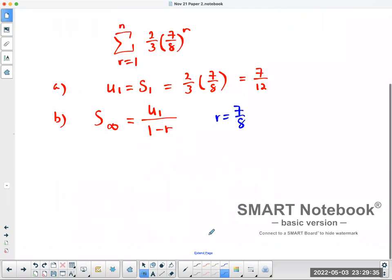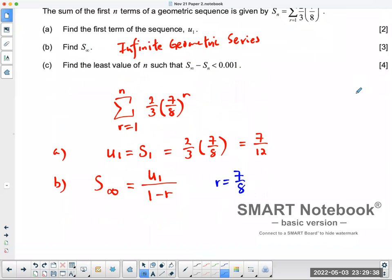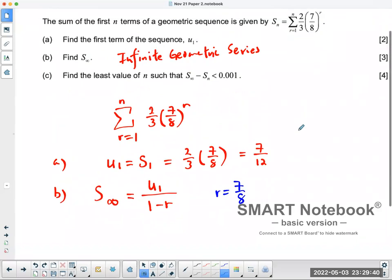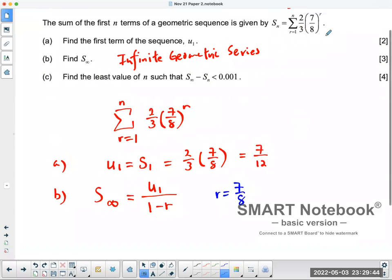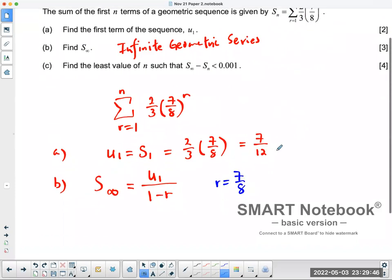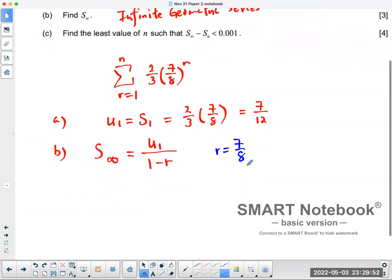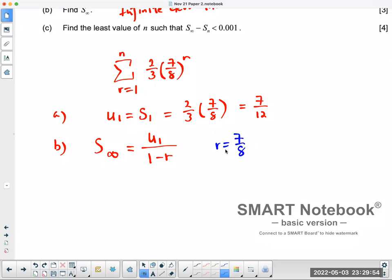If you don't see that, what you can also do is find, it would be a bit more work. You can put a 2 in there, find the sum of two terms, subtract the first term, which will give you the second term, and then take the second term and divide by the first term, which would also give you the r value. But that's a lot more work. I wouldn't really recommend that.